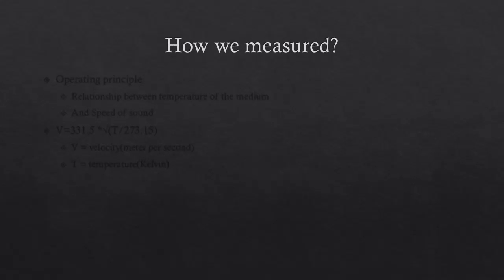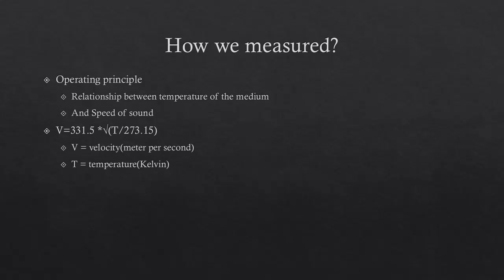How can we measure it? We can measure it by the operating principle. The operating principle of the Acoustic Temperature Sensor is the relationship between the temperature of the medium and the speed of sound. So we can get from the formula, V equals the square root of 331.5 times the square root of T divided by 273.15. V stands for velocity, and this unit is meter per second. And T stands for temperature with unit Kelvin.